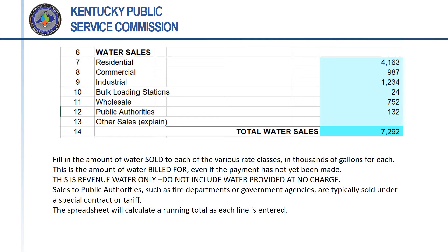The next step is to enter water sales for each of the broader customer classes, in thousands of gallons, using the same rounding rules. There may be multiple meter sizes and rates within a class, particularly for commercial or industrial customers. The figures for water sales should reflect thousands of gallons billed for the month, whether or not payment has been received. The figure for sales is for revenue-producing water only — do not include any water provided free of charge. Sales to public authorities such as fire departments or government agencies typically are made at a special rate specified in a special contractor tariff. The form will keep a running total of sales as each category is entered.